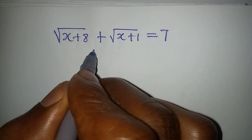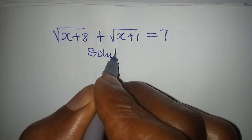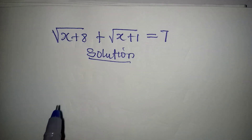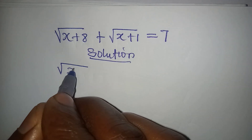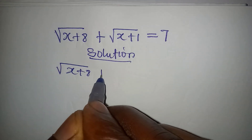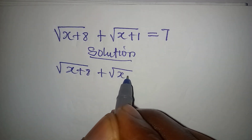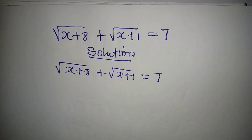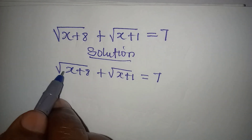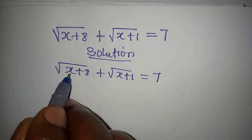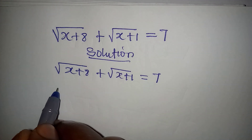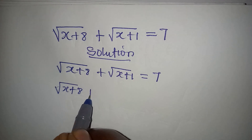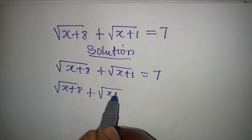Let's deal with this Olympiad mathematics problem. We have square root of (x + 8) plus square root of (x + 1) equal to 7. This is manageable — we can square both sides. We have square root of (x + 8) plus square root of (x + 1), and these will be squared together, then we have 7 squared.